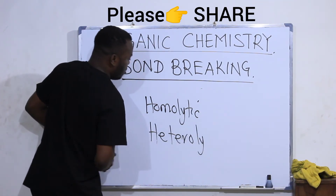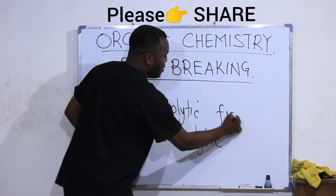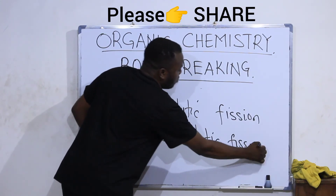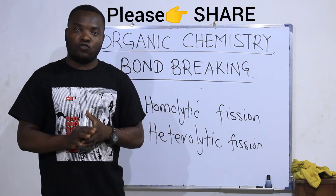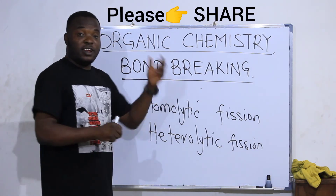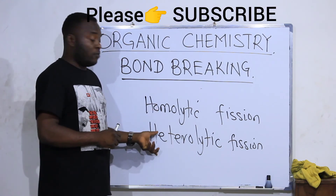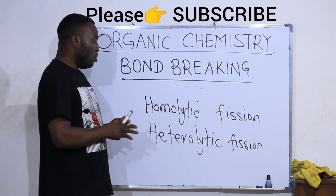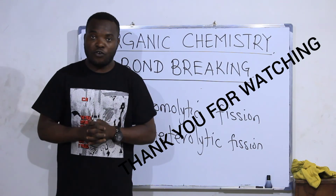The first type of bond breaking is homolytic bond breaking, and the second is heterolytic bond breaking. If you don't call it homolytic bond breaking, you can call it homolytic fission — fission means to break up. These are the two methods of bond breaking in organic chemistry. In the next video, we are going to explain each of these methods one after the other. Click the next video to see what we mean by homolytic and heterolytic fission. Thank you for watching.